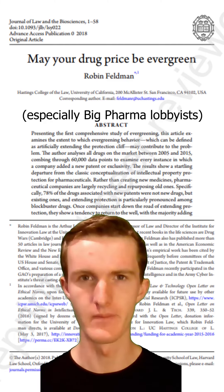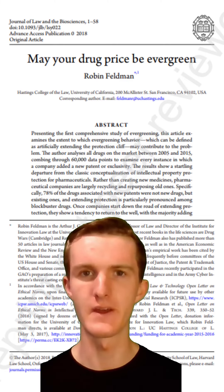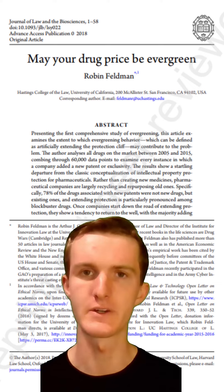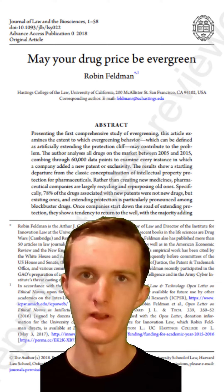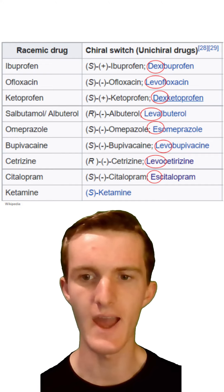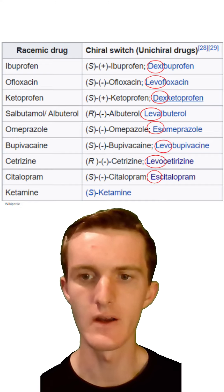Though some argue that it's important to defend intellectual property in this way to encourage research and development of new and improved pharmaceuticals. Finally, as an aside, one way you can identify chiral switches is by their names, which tend to have one of the four following prefixes: levo, dextro, S, or R, which come from the nomenclature that is used to name chiral compounds.